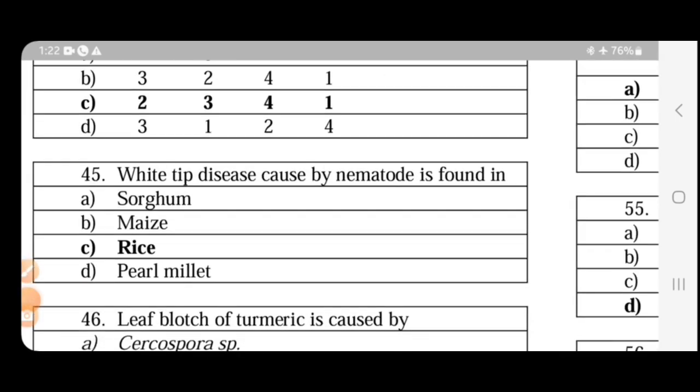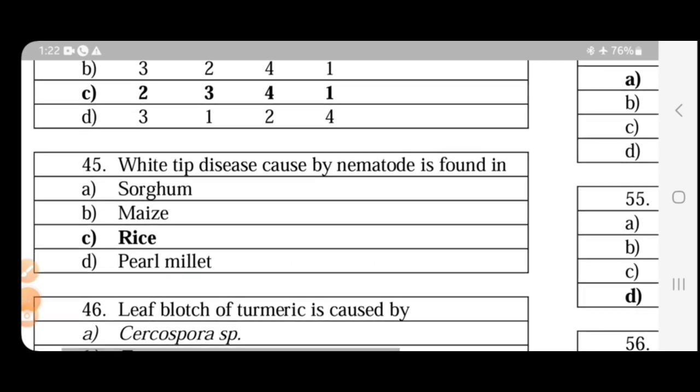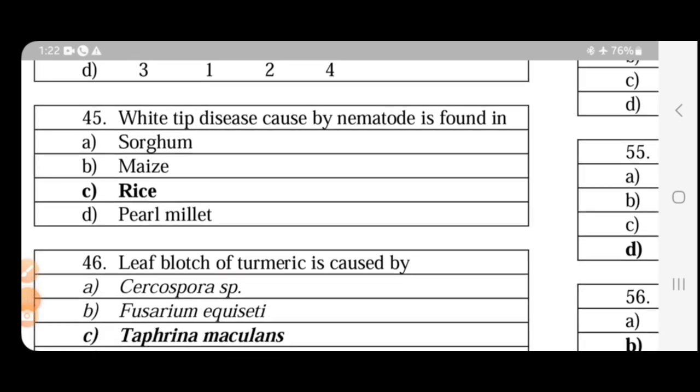White tip disease caused by nematode is found in rice. If you look at the scientific name, Aphelenchoides besseyi. This is a seed-borne nematode and survives in seed storage condition.